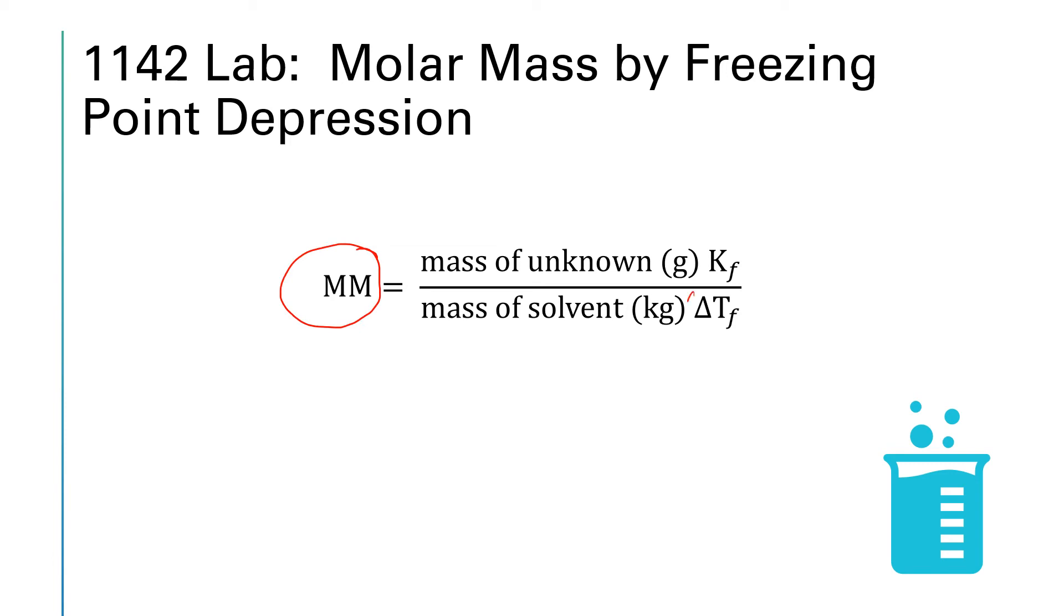So here's the freezing point depression or how many degrees the freezing point was lowered. Notice that you're using the mass of the solvent in kilograms. That's coming from the definition of molality, right? Moles of solute per kilogram of solvent. That does make for a little bit of a trick as you're doing that calculation. Make sure your mass of solvent is actually in kilograms and not grams. And then you'll use the k sub f for your solvent, whatever the solvent happens to be.